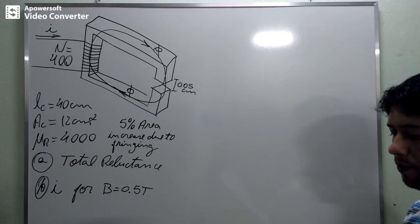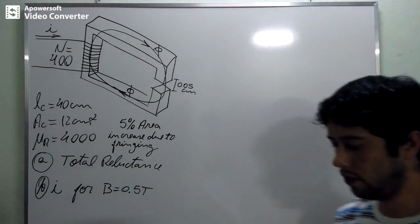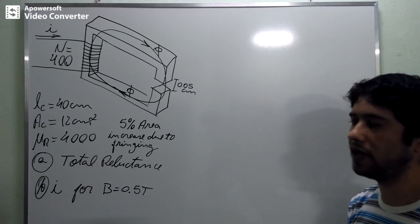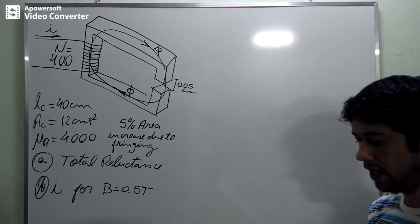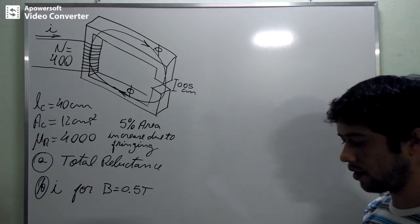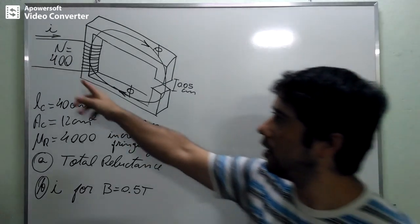The relative permeability of the core is 4000 times that of space. And the coil of wire on the core has 400 turns.